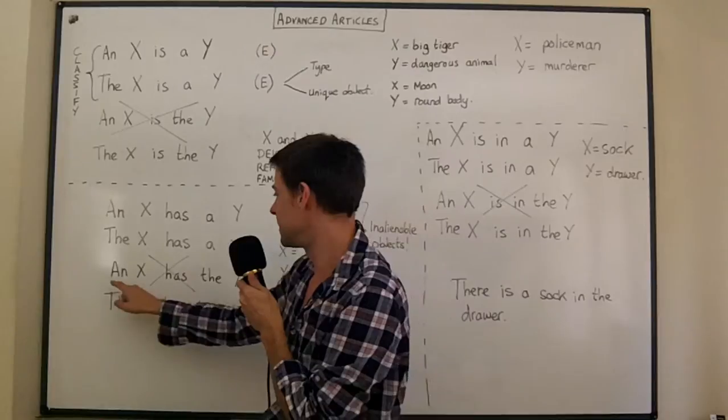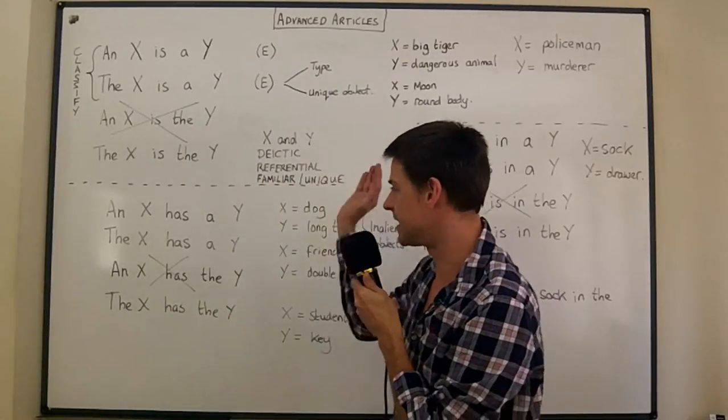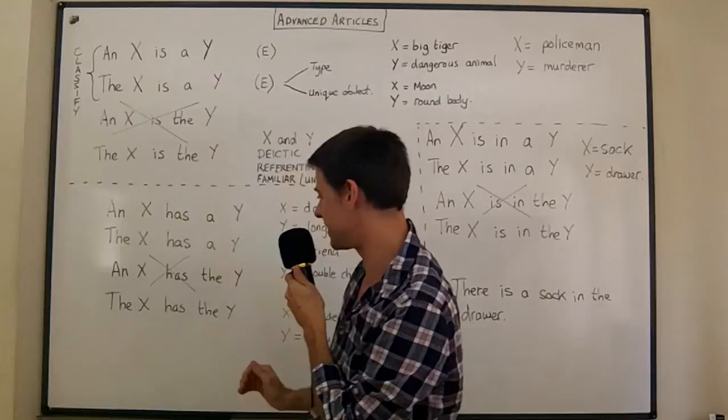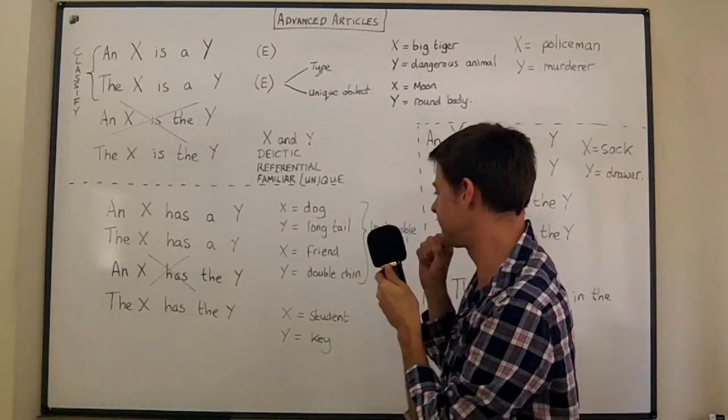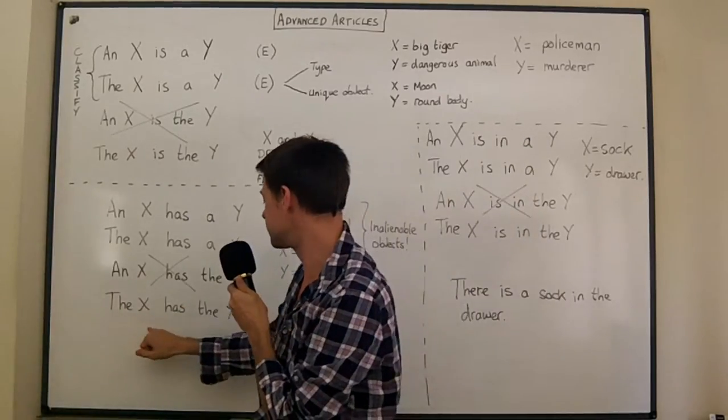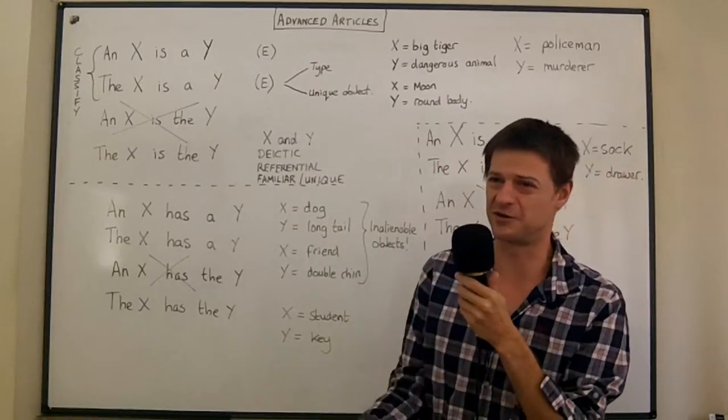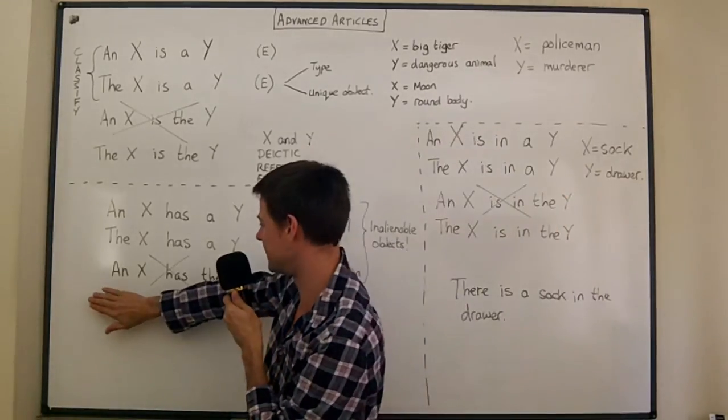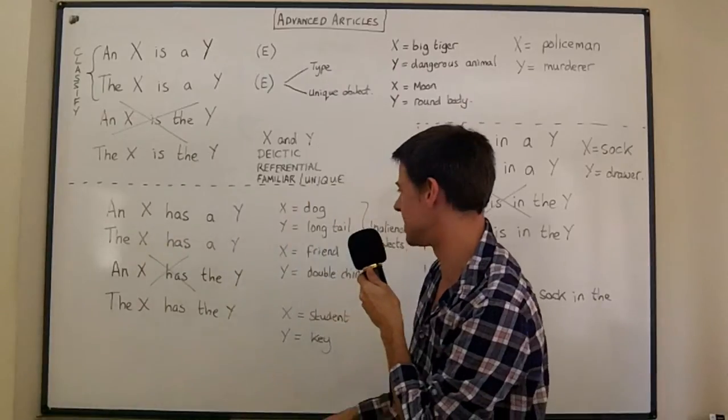You cannot say a dog has the long tail. That is unacceptable again just like up here. But you can say the dog has the long tail if you know which long tail. But that's very unlikely again. So again this one is the best one.